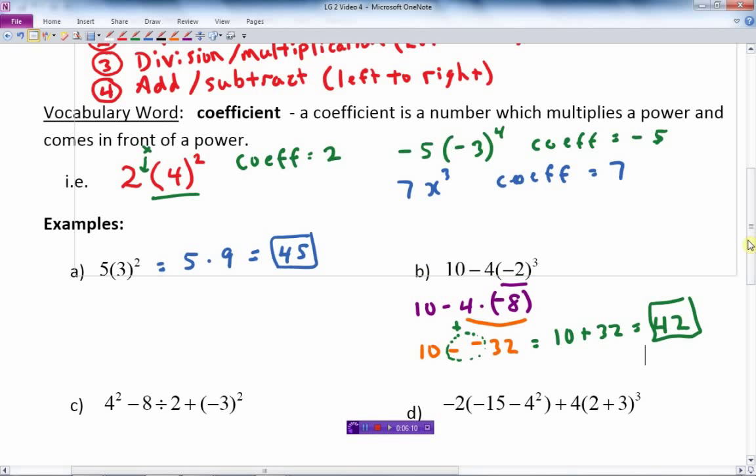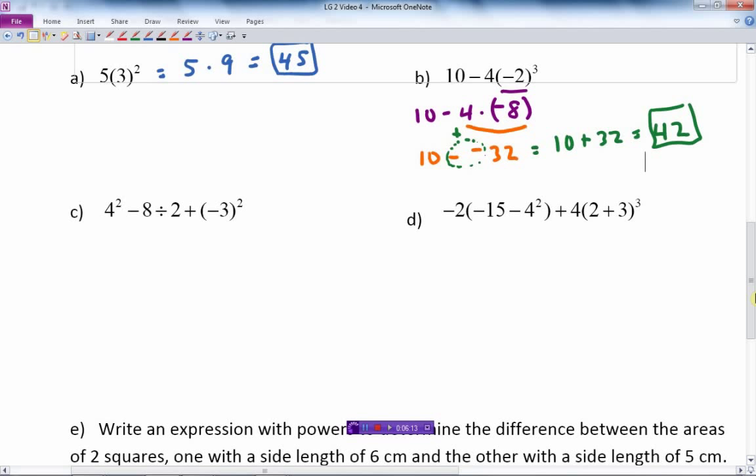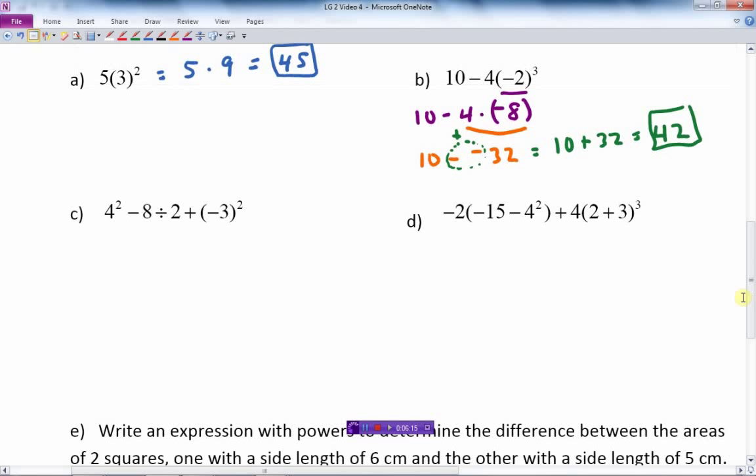Two more examples and we'll finish this off here. First thing we do is brackets. Nothing in the bracket, just a number, so we leave that like it is. Now we do the exponents, so 4 squared is 16. Write the rest of it the same.